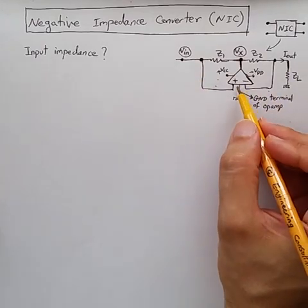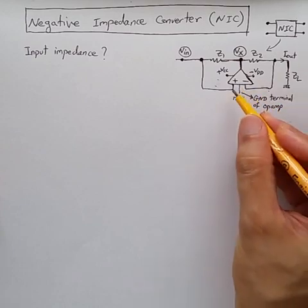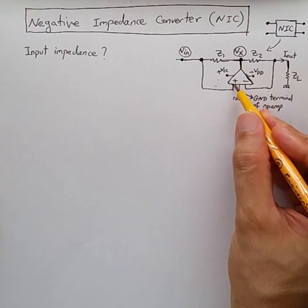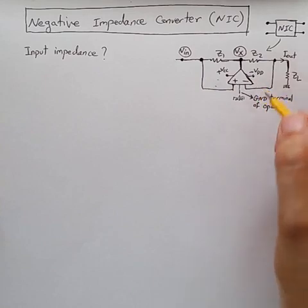Assuming an ideal op-amp working in linear region, then the virtual short should hold, and V of positive terminal should be equal to V of negative terminal. And this op-amp is, of course, in negative feedback loop.